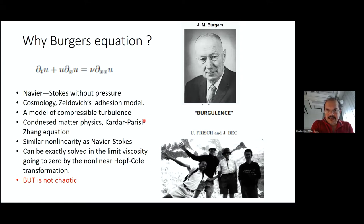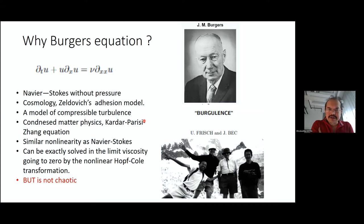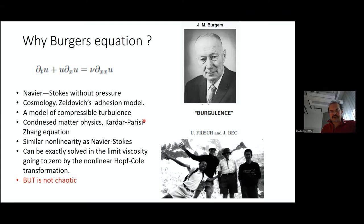Burgers acts as a toy model for turbulence — it is connected to various interesting problems and can be solved in great detail. However, the bad thing is that it's not chaotic. An excellent review of Burgers applied to turbulence problems is the Les Houches lecture by Bec and Frisch — if you search 'Burgulence' in Google, it appears at the top. Burgers also has a strong connection to compressible turbulence, which astrophysicists study extensively.